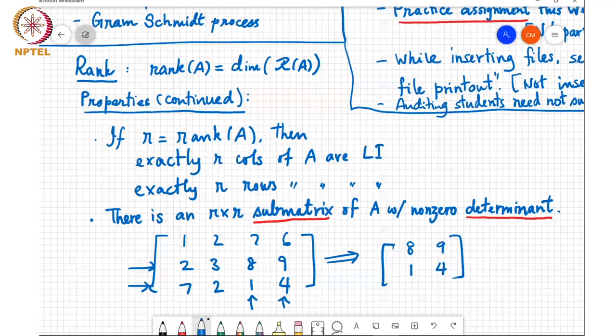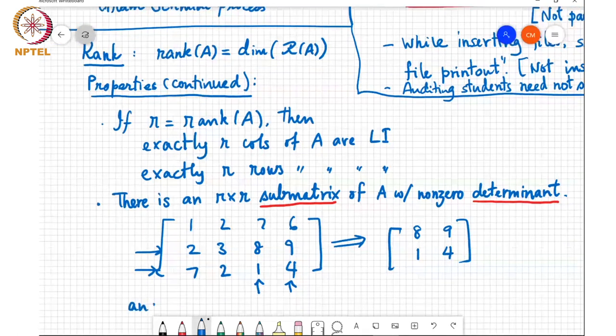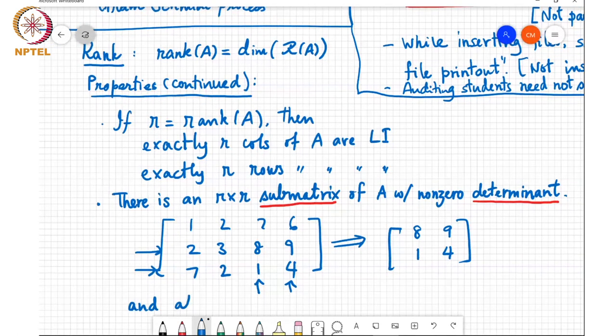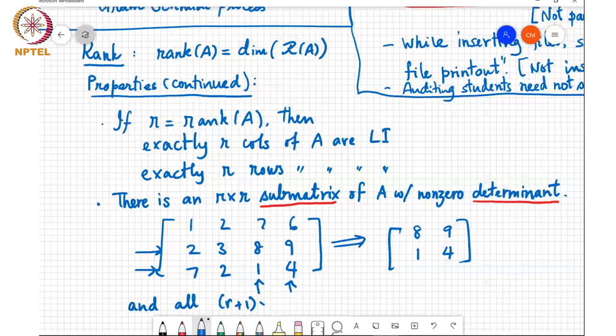But more importantly, all R plus 1 cross R plus 1 submatrices have zero determinant.